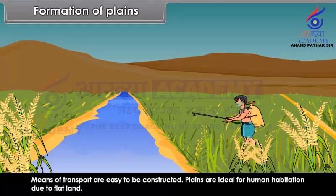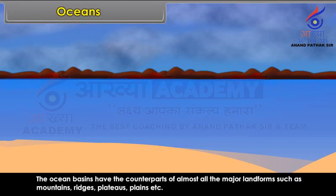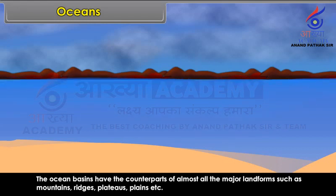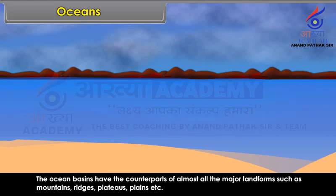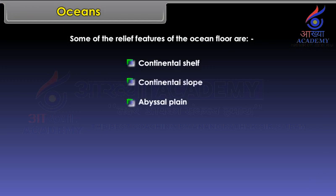Oceans. There are huge reservoirs of water on the Earth's surface known as oceans. The ocean basins have the counterparts of almost all the major landforms such as mountains, ridges, plateaus, and plains. Some of the relief features of the ocean floor are Continental Shelf, Continental Slope, Abyssal Plain, Ocean Trench, Submarine Ridges, and Islands.